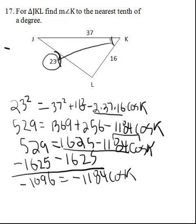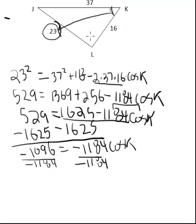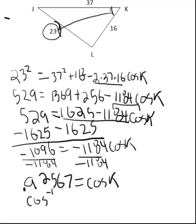And we'll get negative 1,096 on the left which equals negative 1,184 cosine K on the right. Now we can divide both sides by negative 1,184. And you will get cosine K equals positive 0.92567. So to get K we're going to use inverse cosine.